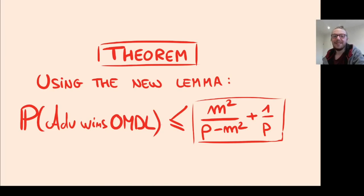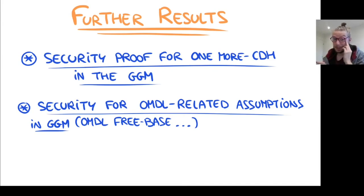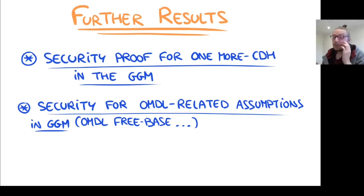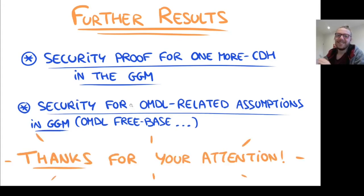Further results in our work include a security proof for the one more computational Diffie-Hellman in the generic group model, and our approach can lead to security proofs for other one more discrete log related assumptions, such as one more discrete log with preprocessing. Thank you for your attention.